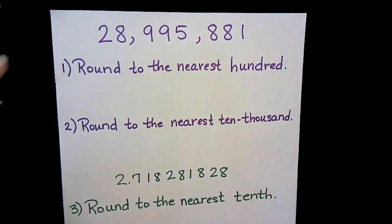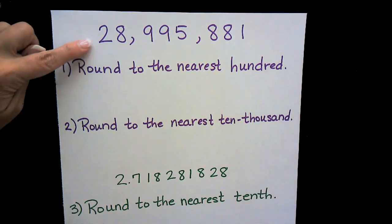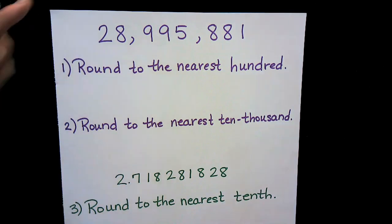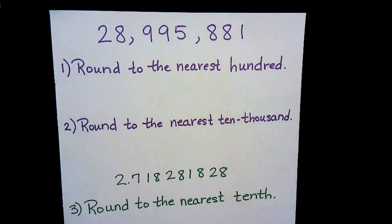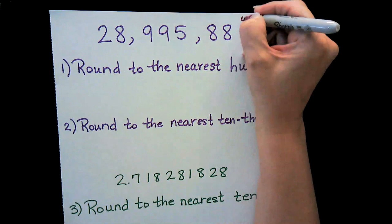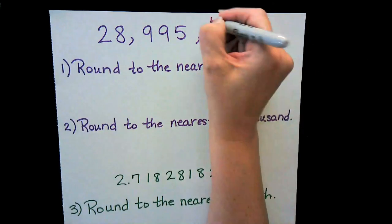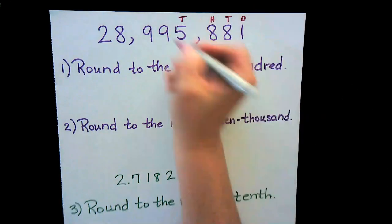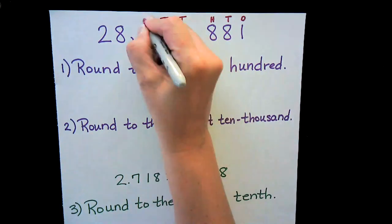In this video we're going to be working on rounding and estimation. Let's begin with this number: 28 million, nine hundred ninety-five thousand, eight hundred and eighty-one. Our first problem is to round to the nearest hundred. Let's make sure we remember our place values — ones place, tens, hundreds, thousands, ten thousands, hundred thousands.